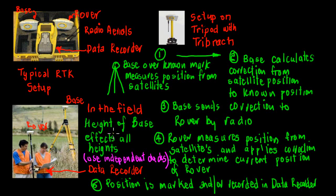It then sends a signal via the radio to the rover and it tells the rover what correction is applying at the base. Now at the rover, there's a similar sort of bit of kit to the base. It can measure its position from the satellites and then it just applies the correction to determine its current position. It can do this very quickly. So we have the base over a known mark, determines a correction from the satellite position to the known position, radios the correction to the rover, and the rover applies the correction and can work out immediately where it is.